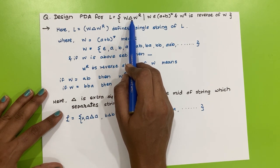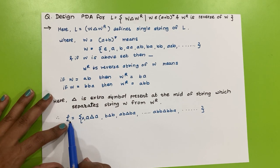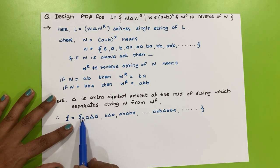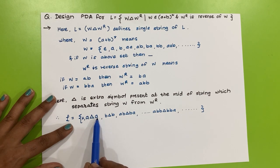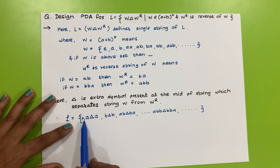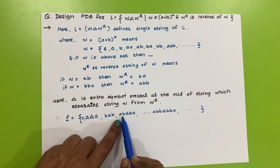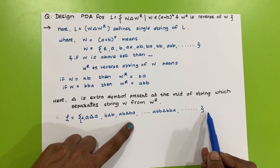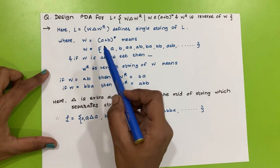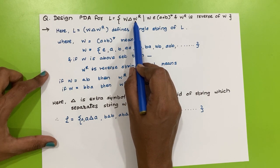A single string of L is composed of: first the string w, then concatenated by △, then concatenated by w^R. So the smallest string from L is just △ (where w is empty). Next smallest is a△a (w = a, so reverse is also a). If w = ab, the total string of L will be ab△ba.